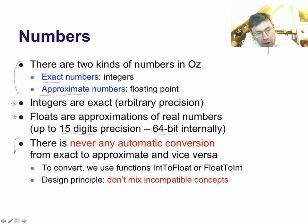In Oz, there is never any automatic conversion from exact to approximate and vice versa, from integer to float and vice versa. Because we have two worlds here. We have the exact world and the approximate world. And they are considered separate. There's no automatic link between the two.